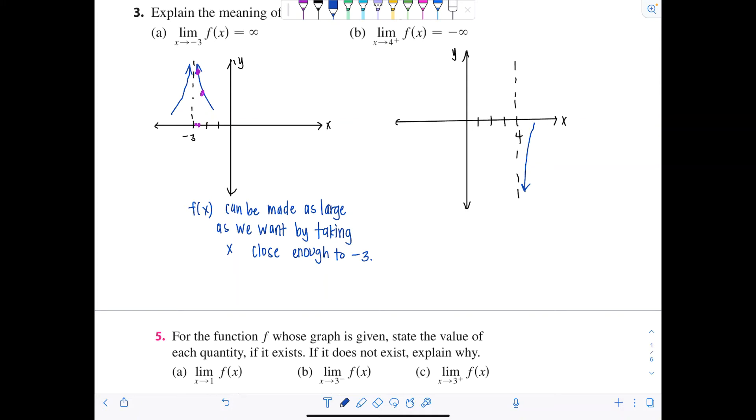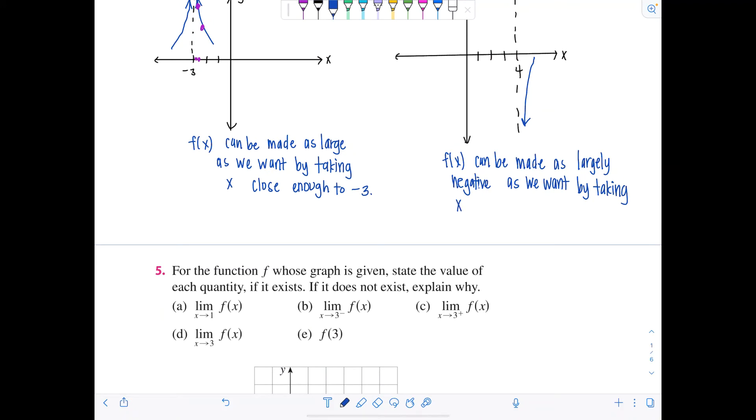But same thing, this means f of x can be made as largely negative, negative as we want, by taking x close enough to 4, but you have to come from the right side of 4, yes? So you could say, through values larger than 4, or from the right side of 4. Larger than 4. Okay, now that part's done with. I never like explaining too much, but it is necessary.